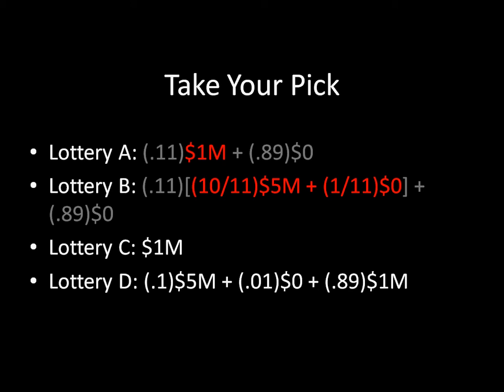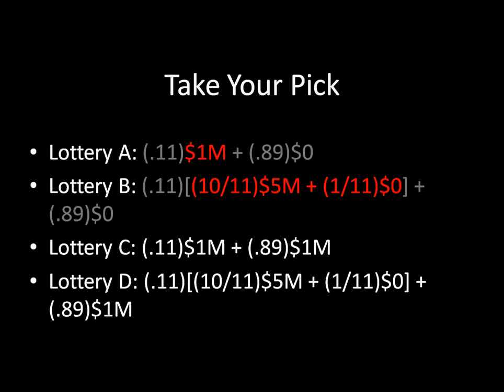Now let's look at Lottery C versus Lottery D. We can break down Lottery C not as $1 million with certainty, but as paying you 11% of the time $1 million and 89% of the time $1 million. We can also disaggregate Lottery D as a nested lottery very similar to before: 11% of the time you're playing a nested lottery where 10 out of every 11 times you receive $5 million and 1 out of every 11 times you receive no money at all, and the remaining 89% of the time you're receiving $1 million.